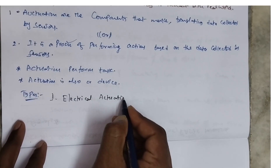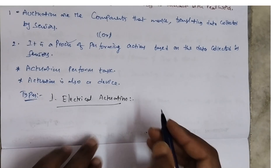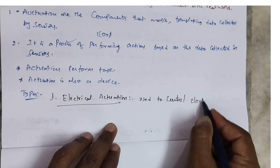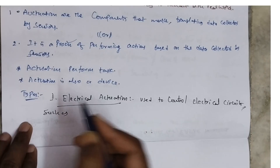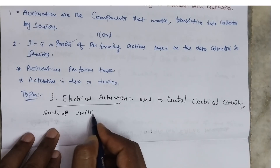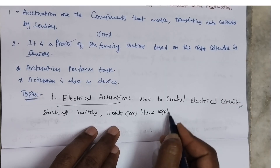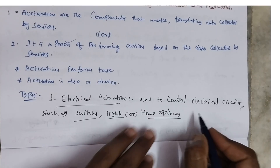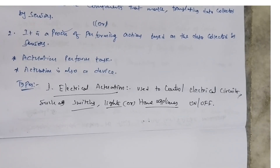Electrical activation is used to control electrical circuits, such as switching lights or home appliances on or off. Home appliances include devices like TVs, fridges, and washing machines. Switching them on or off is called electrical activation.